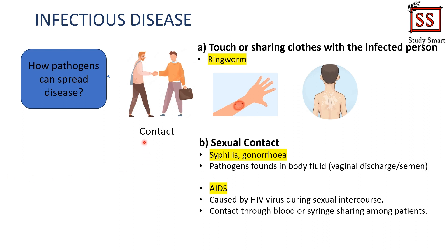The third way pathogens can transmit is through human contact. Touching or sharing clothes with an infected person can cause diseases such as ringworm. Sexual contact can also result in pathogen transmission through body fluids, and transmission can also occur through blood transfusion.